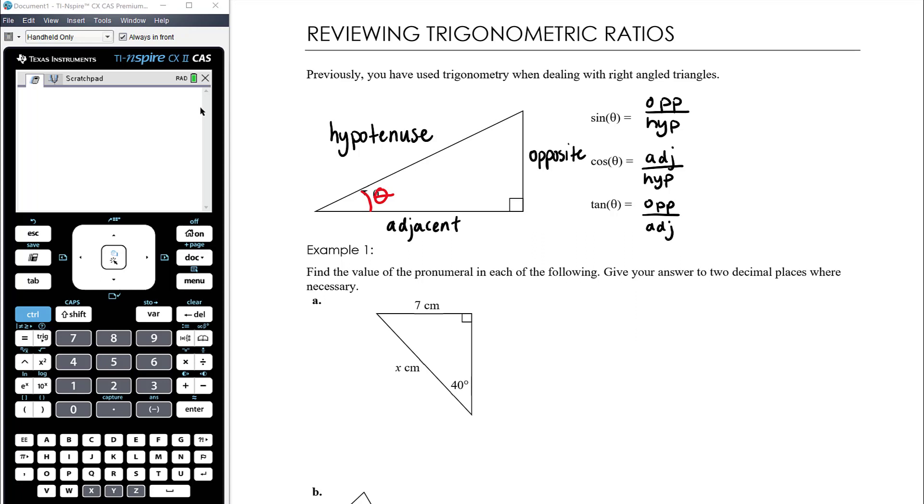You may recall back from year 9 and 10 that this is SOH, sin is opposite over hypotenuse. CAH, cos is adjacent over hypotenuse. And TOA, tan is opposite over adjacent. So SOH CAH TOA. Those things don't go away.